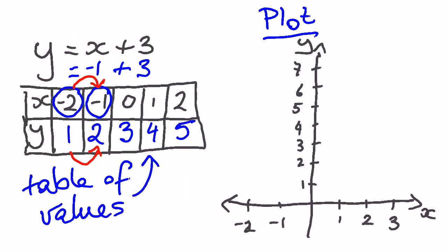This important point is called my y-intercept, and I find it by finding when x is 0. When x is 0, which point is on my line? In this case, it's when y is 3. So my y-intercept is at x equals 0, y equals 3. That's my first point.